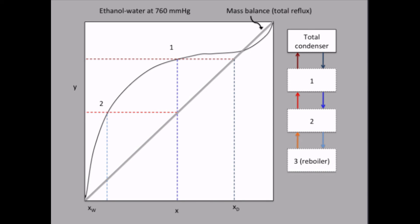And the vapor coming to equilibrium stage 2 must be given by the mass balance. And finally, the liquid flux from the reboiler — or the liquid composition in the reboiler — must be given by the system curve. And that's our third equilibrium stage.